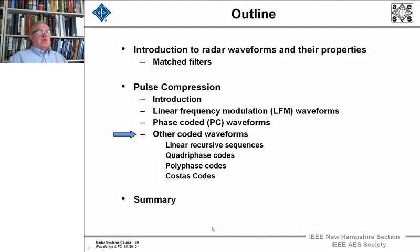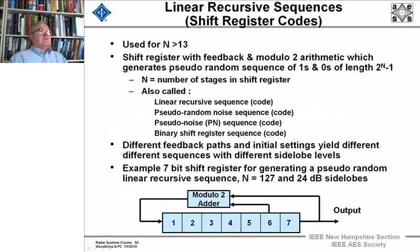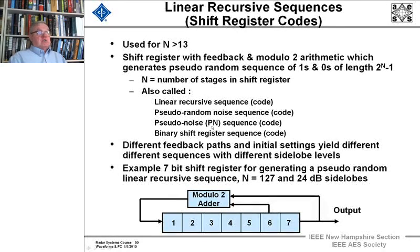Let's look at some other different kinds of coded waveforms. They're used in different radars for different reasons, and in communications too. There are linear recursive sequences — shift register codes — used for lengths greater than n. The shift register with feedback modulo-2 arithmetic just generates a pseudorandom sequence of 1s and 0s of length 2 to the n minus 1, where n is the number of stages in the shift register. It also goes by many other names: pseudorandom noise codes, pseudonoise sequences, binary shift registers, linear recursive sequence codes — they're all the same thing.